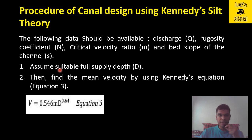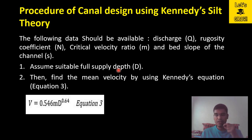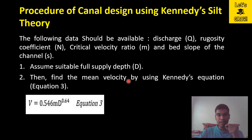Step 1: Assume a suitable full supply depth D. Initially, take a value of D ranging from 1 meter to 2 meter, based on observation or the quantity of discharge. You can start the trial by assuming a value of full supply depth D. Step 2: Find the mean velocity using Kennedy's equation. With the assumed value of D and the known value of m, calculate the velocity of flow.